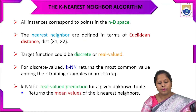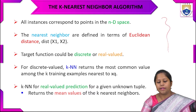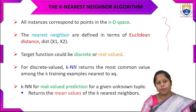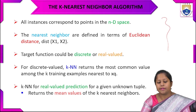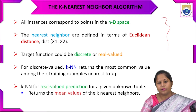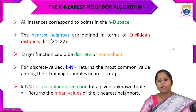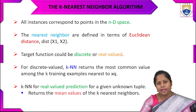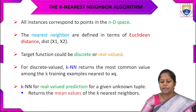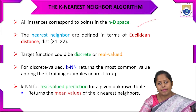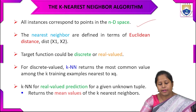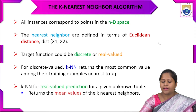Let's start with the K-nearest neighbor algorithm. In this algorithm, there will be K nearest neighbors. Just as in real life the nearest houses around you are your neighbors, similarly K is the number of neighbors residing near a point. All examples correspond to an n-dimensional space. The nearest neighbor is defined by measuring the Euclidean distance.